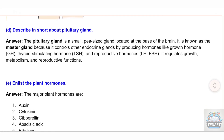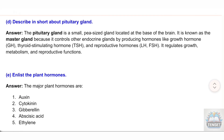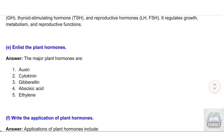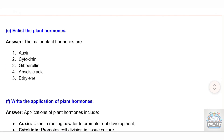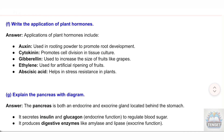It regulates growth, metabolism, and reproductive functions. E) Enlist the plant hormones. Answer: The major plant hormones are: Auxin, Cytokinin, Gibberellin, Abscisic acid, and Ethylene. F) Write the applications of plant hormones.